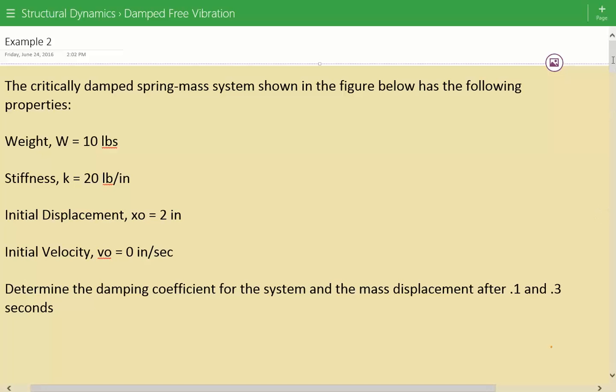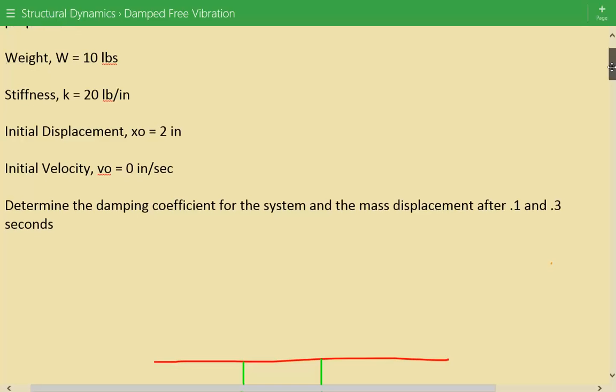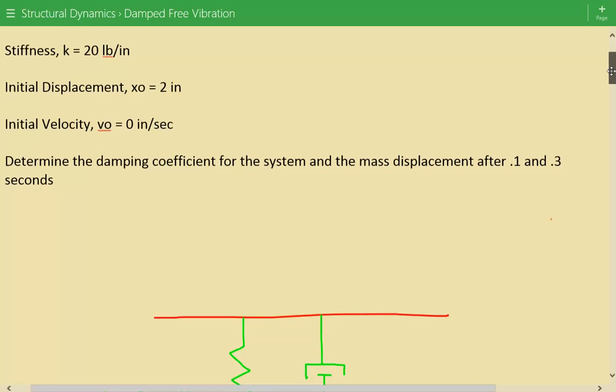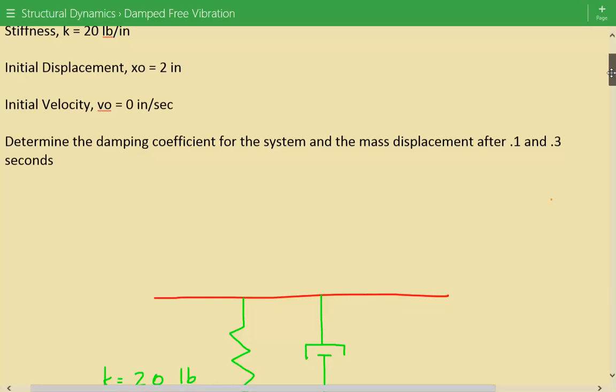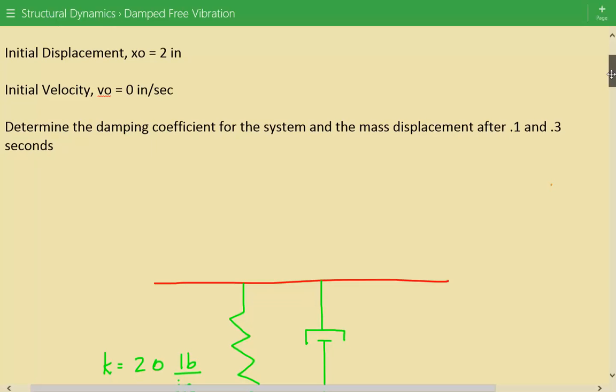It has a weight, the weight of the mass is equal to 10 pounds, the stiffness of the spring is equal to 20 pounds per inch, and the initial displacement is 2 inches. The initial velocity is equal to 0 inches per second.